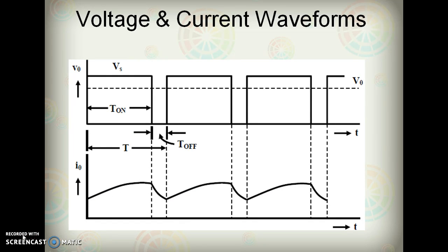The output voltage and current waveforms of the circuit are shown in the figure. The output voltage is the same as the input voltage — that is, V0 is equal to Vs when the switch is ON, for the time period 0 to T_ON. The switch is turned ON at time T equal to 0 and turned OFF at time T equal to T_ON; this is called the ON period. During the next time interval, T_ON to T, the output voltage is 0 — that is, V0 equals 0 and the freewheeling diode DF now conducts. The OFF period is T_OFF, which is equivalent to T minus T_ON within the time period.